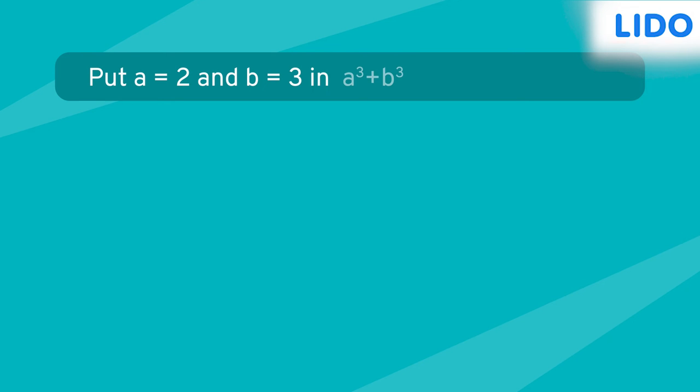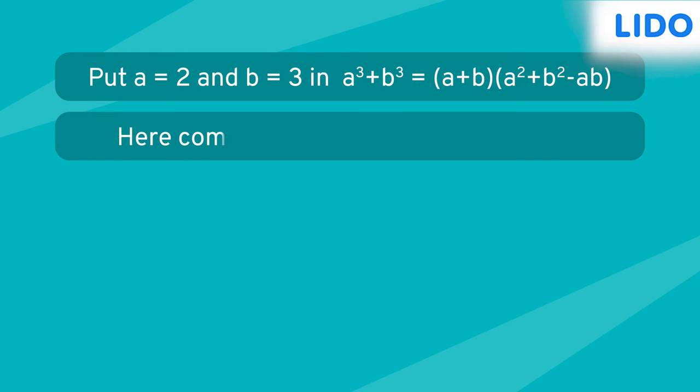To confirm this, let's substitute the value of A as 2 and B as 3. Now applying the identity A cube plus B cube equals (A plus B) multiplied by (A square plus B square minus AB), we'll get 2 cube plus 3 cube equals (2 plus 3) multiplied by (2 square plus 3 square minus 2 into 3).